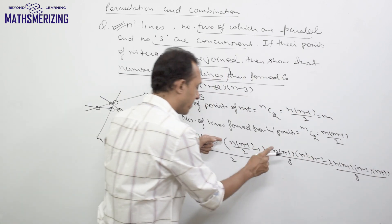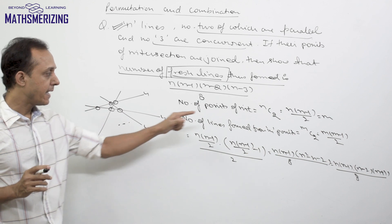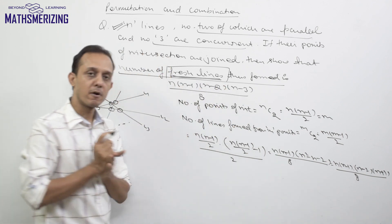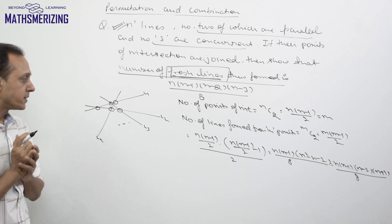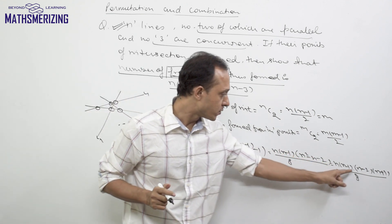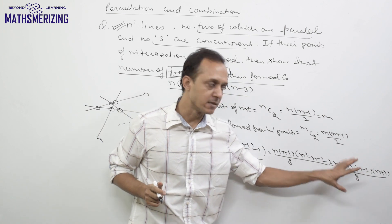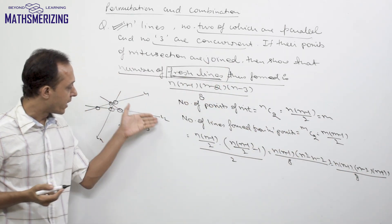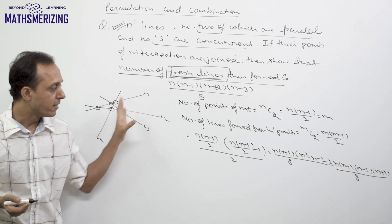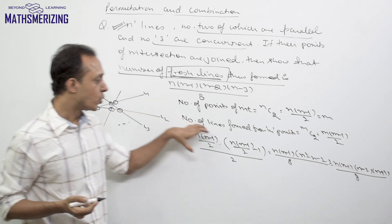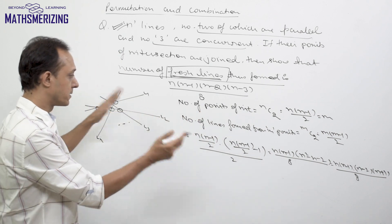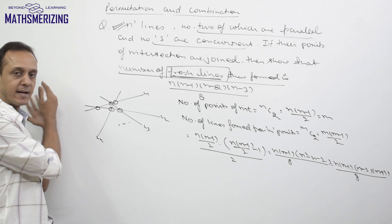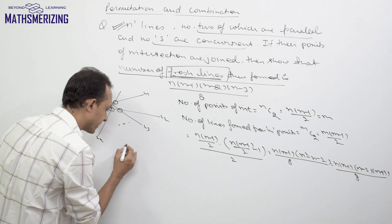Now these are the number of lines that can be formed from these m points, but we need to find the number of fresh lines or new lines. Out of these n(n-1)(n-2)(n+1)/8 lines, some will be old lines like l1, l2, l3, or ln, and then there will be some new lines. So from these total lines, we have to subtract or exclude all the old lines or the previous lines.